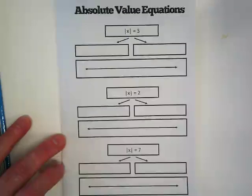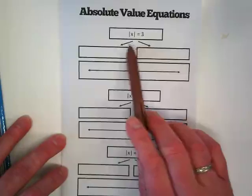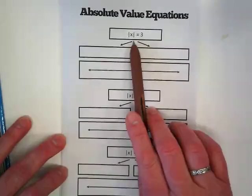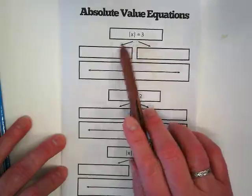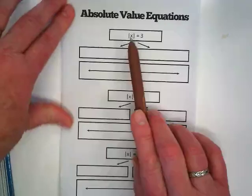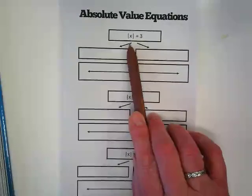What I like about this graphic organizer is that it's showing that there has to be two different versions of this absolute value of x equals 3. Whenever we're solving absolute value equations, our goal is to get the absolute value isolated. In this case, it already is.